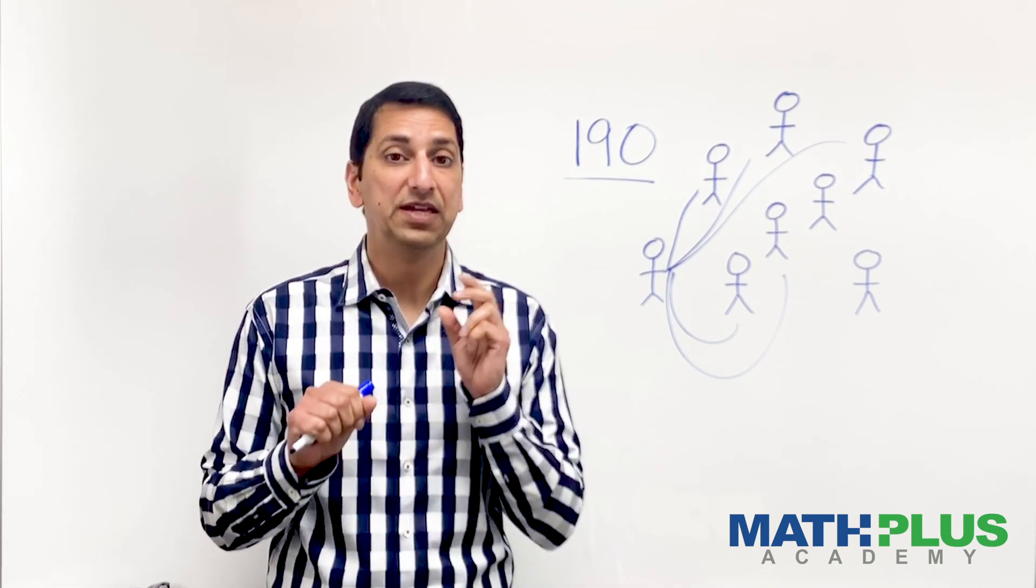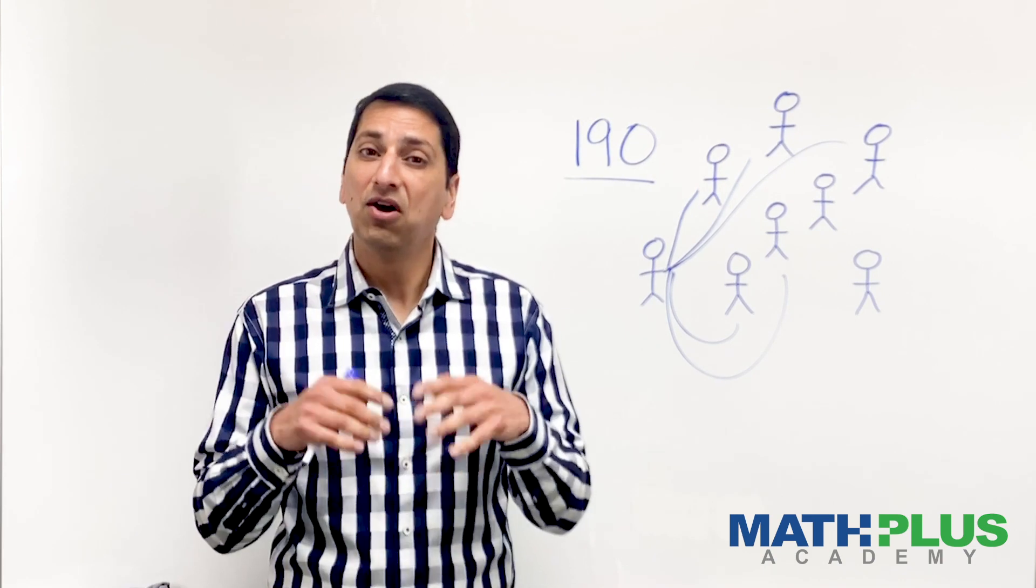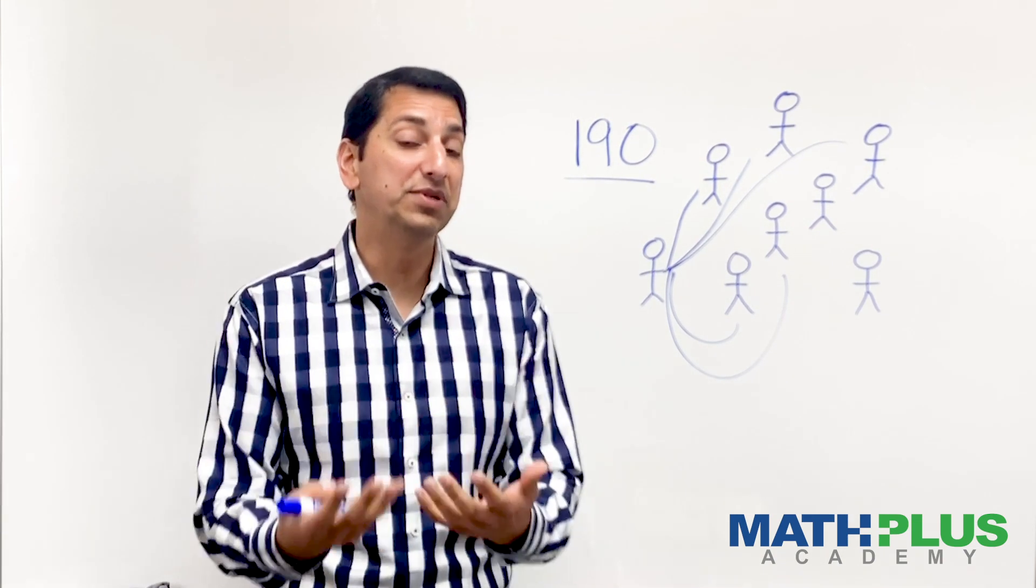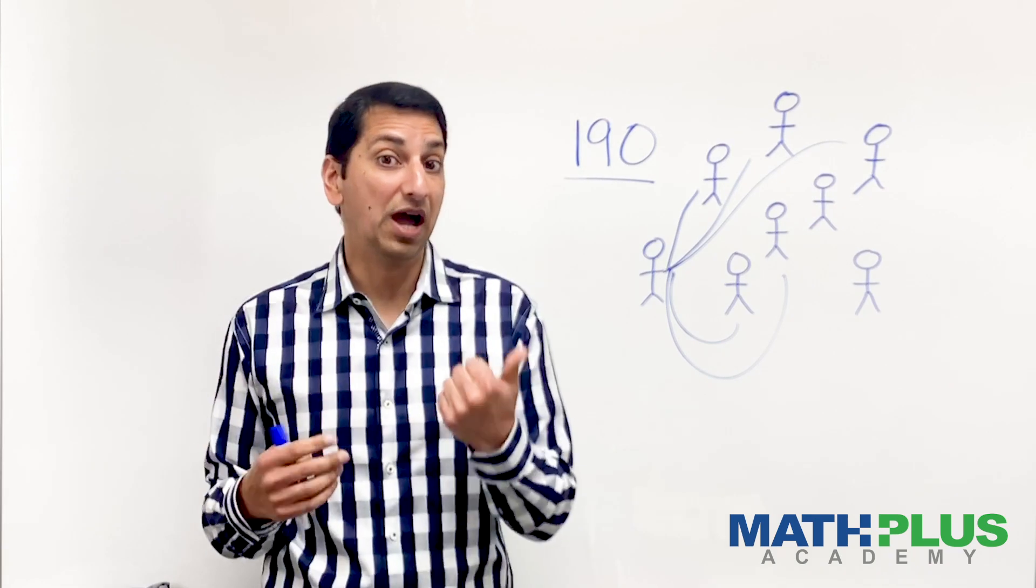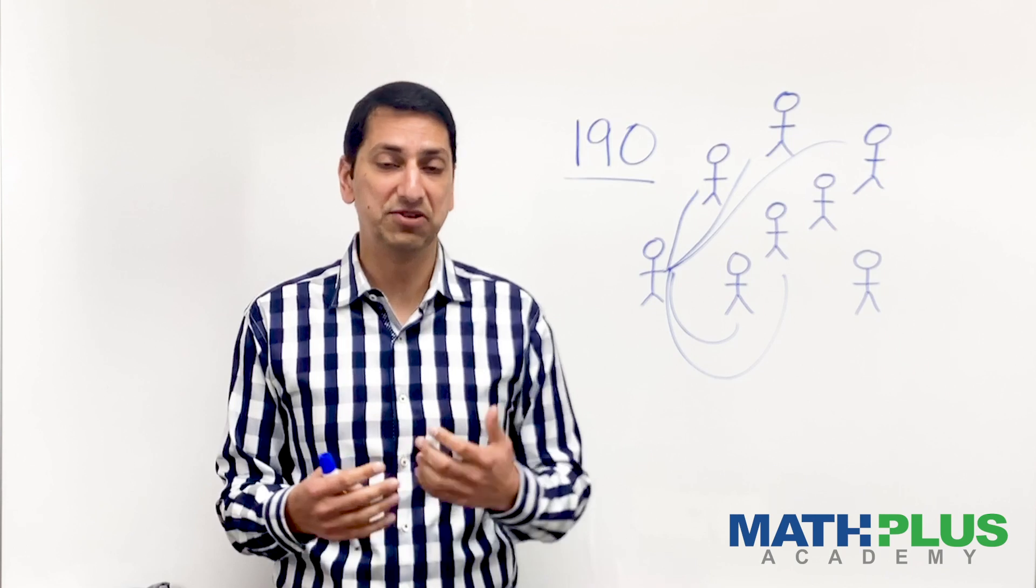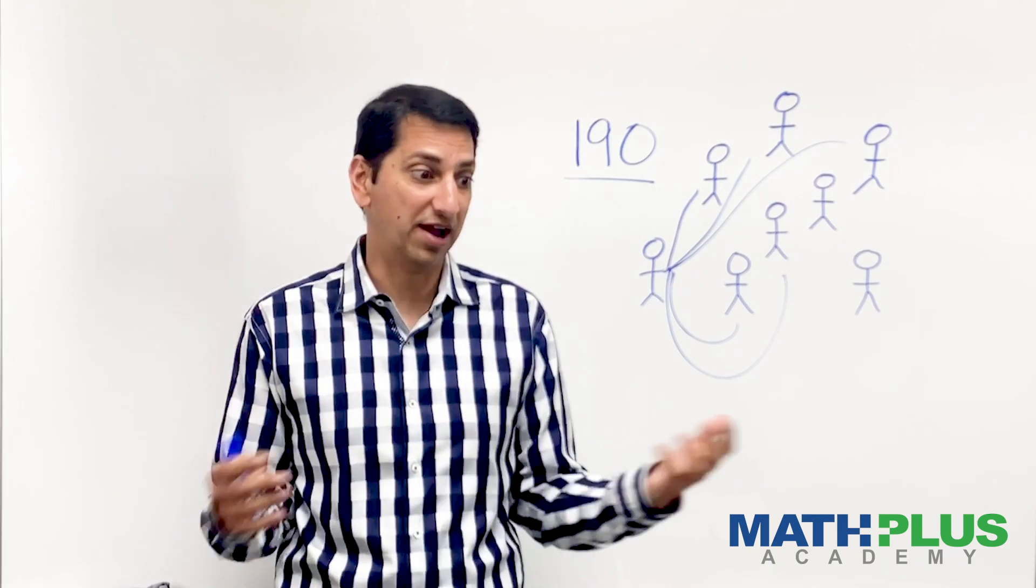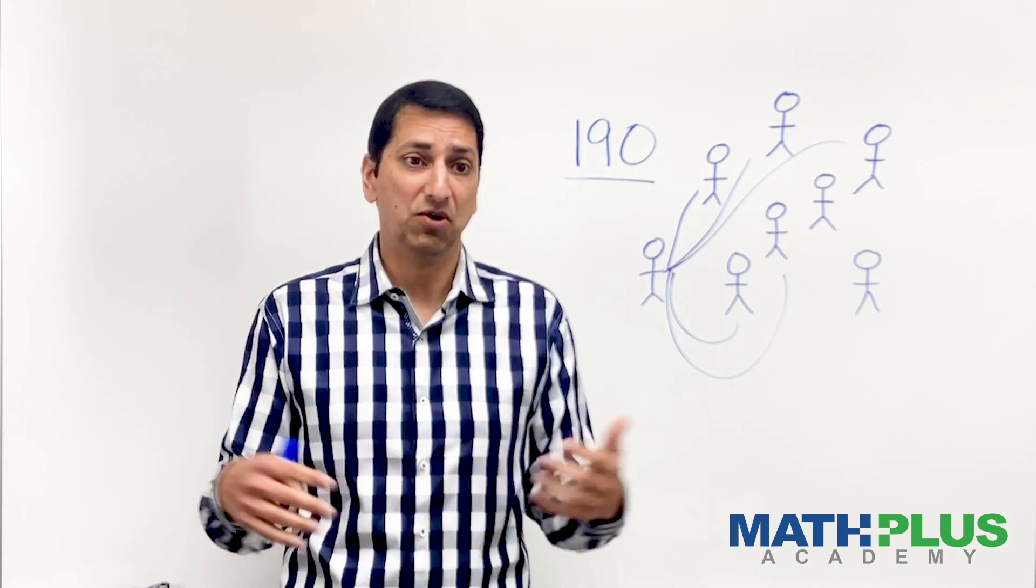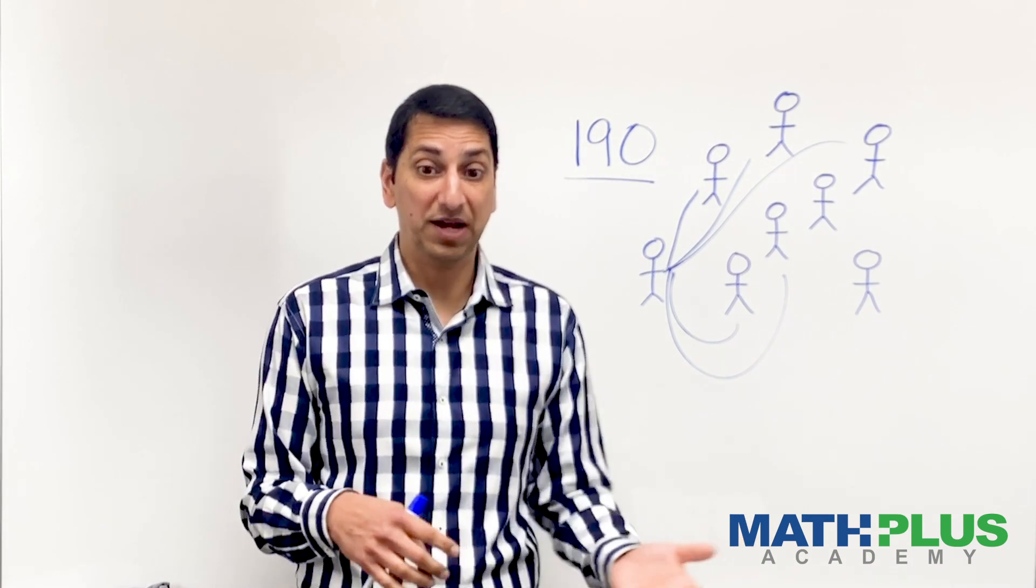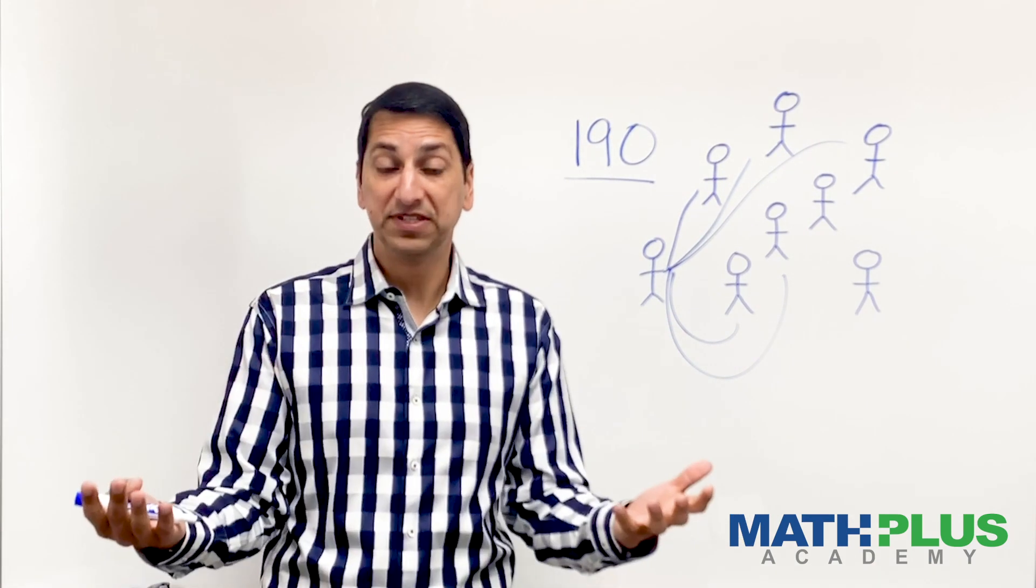And then the last thing is I want you to think about some extensions. What can we do with this? How can we take it further? Well, a question might be, well, what are the possible numbers of handshakes? Can you have 189 handshakes where everyone shakes hands with everybody else? Or 191? I don't know. Are there some numbers that are possible and other numbers that are not? Something to explore.